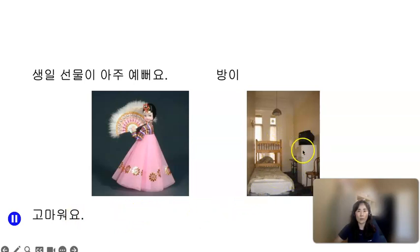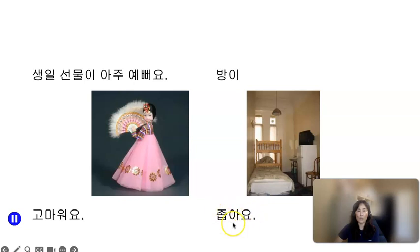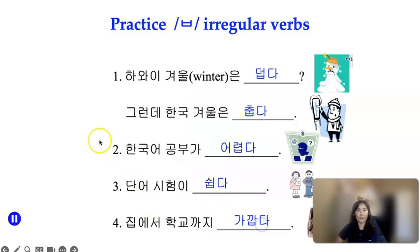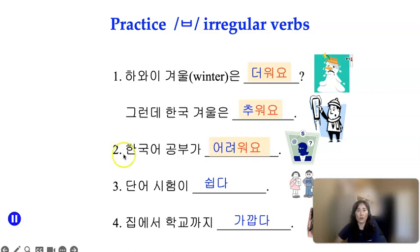However, when you describe a room — how is it? It's small and narrow — you say 방이 좁아요. 좁다 is regular. Review: 더워요, 추워요, 어려워요, 쉬워요, 가까워요 — all ㅂ irregulars.